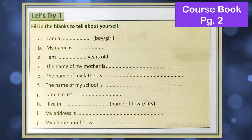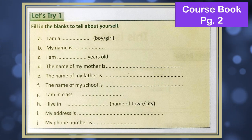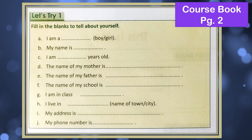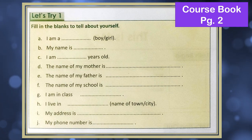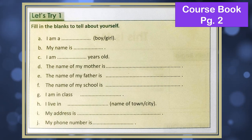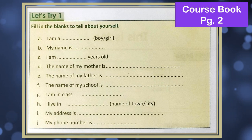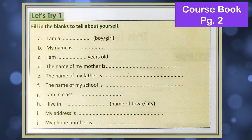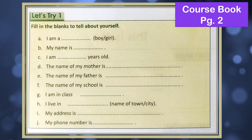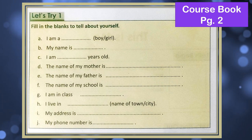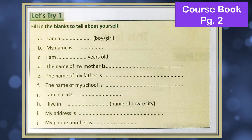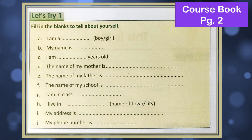So let's start. Our first blank is: I am a dash. Now if you are a boy, you will write down 'boy' — I am a boy. If you are a girl, you write down 'I am a girl.' Next one: My name is — here you will write down your name. Again, the answers will be different, so I am not writing the answer. You write it yourself. I am dash years old — here you will write how many years old you are.